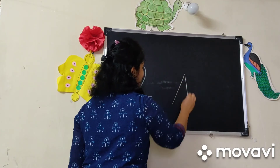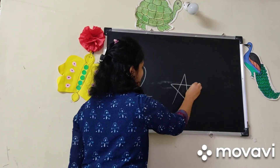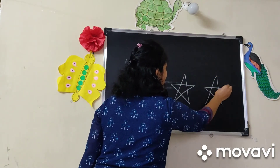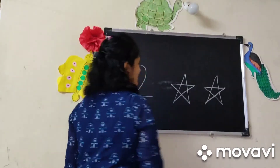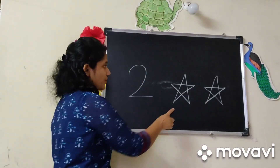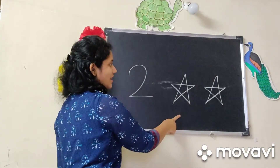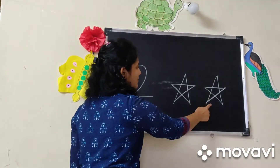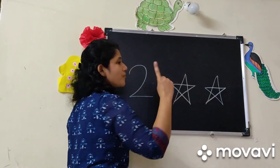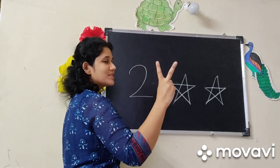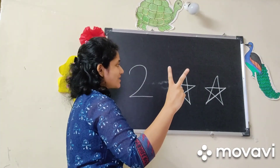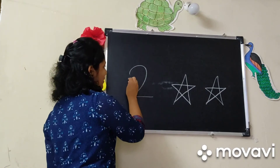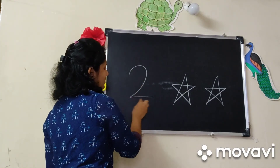Now see here. Here are stars. How many stars are here? Count it. 1, 2. 2 stars. And this is number 2.